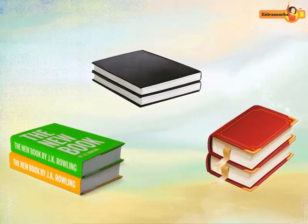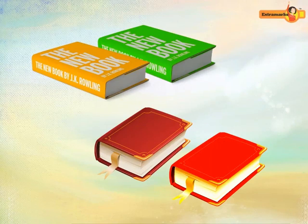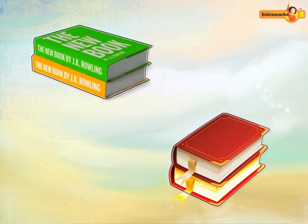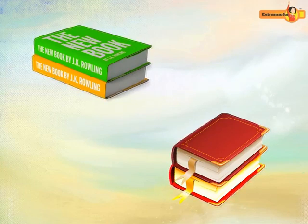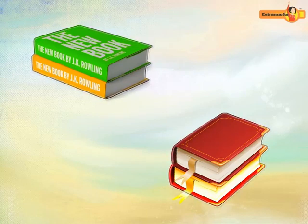Observe the following pair of books. What similarity do you observe in this pair of books? One of the books covers the other book completely and exactly. This means these books are of same shape and same size.